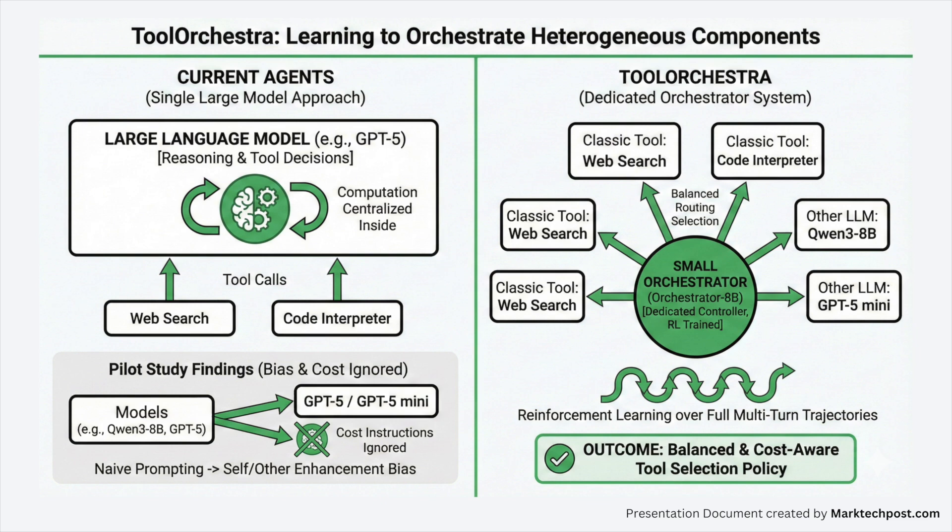This research's pilot study shows that naive prompting leads to self-enhancement and other enhancement biases, where models like QUEN3 8B or GPT-5 route the majority of queries back to GPT-5 or GPT-5 Mini and ignore cost instructions. Tool Orchestra instead trains a small orchestrator explicitly for the routing problem using reinforcement learning over full multi-turn trajectories, so the controller can learn a more balanced and cost-aware tool selection policy.